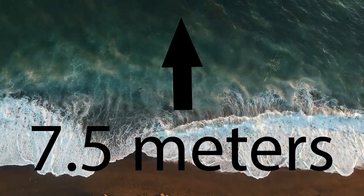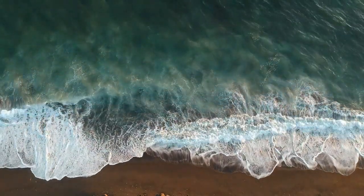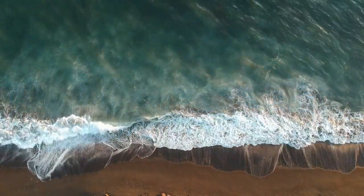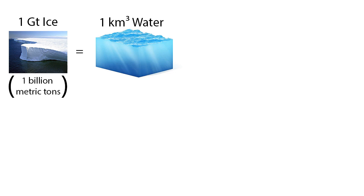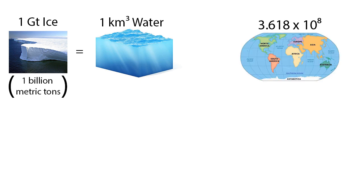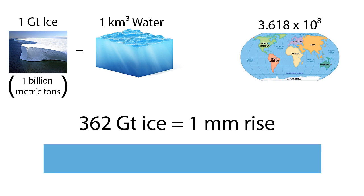To understand the massive scale of such a statement, we first need to do some conversions. One gigaton of ice is equal to about one cubic kilometer of ocean water. Knowing that the total area of the world's oceans is about 362 million square kilometers, to raise global sea levels a full millimeter, 362 gigatons of ice need to be added to the ocean.